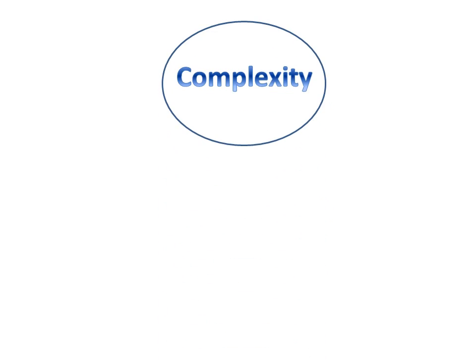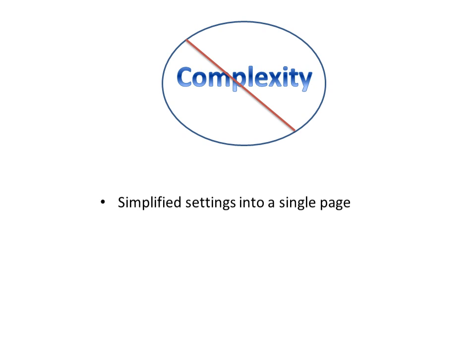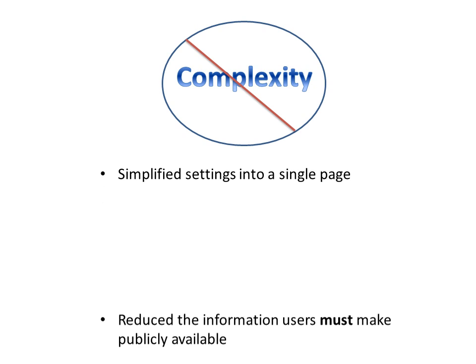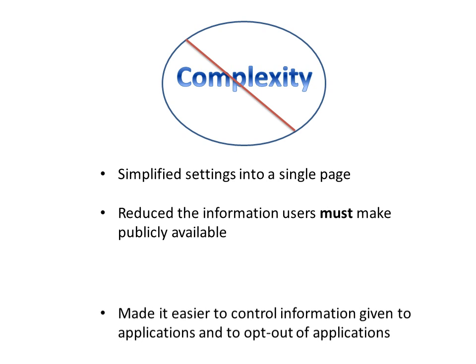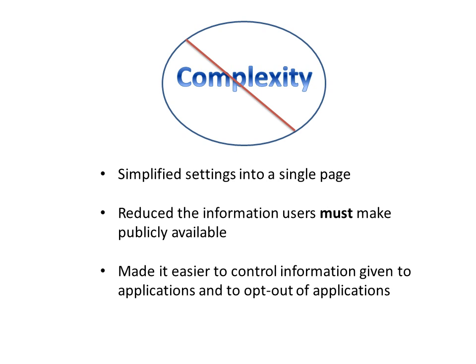One of the problems with Facebook's privacy settings was that they were just too complicated. They still give you lots of options if you want to get granular, but now you can set your basic settings on a single, more simplified page. Facebook has also reduced the information that users must make publicly available, and it's made it easier to control information given to applications. There's even a simple way to opt out of all applications.